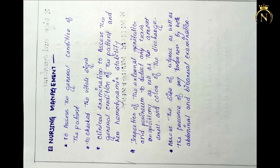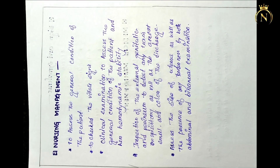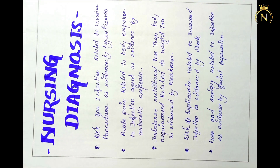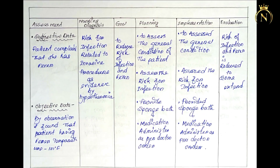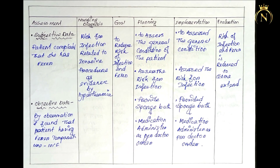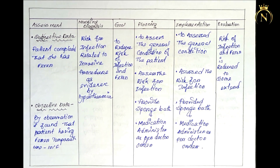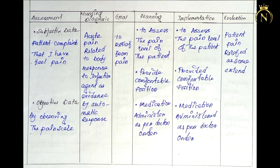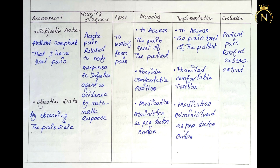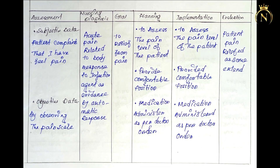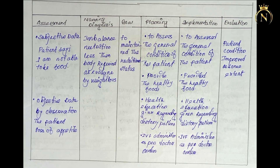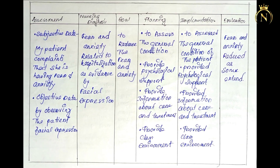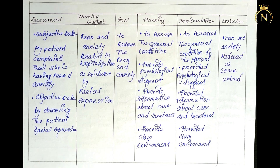For the nursing diagnosis, you can mention it based on both the book picture and the patient picture. After the nursing diagnosis, you have to make the nursing care plan — you can write a maximum of five. The nursing care plan follows six components: assessment, diagnosis, goal, planning, implementation, and evaluation. You can add to it if you want.